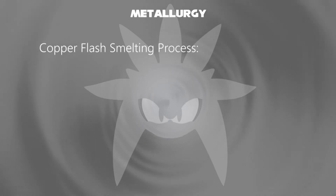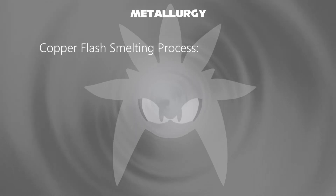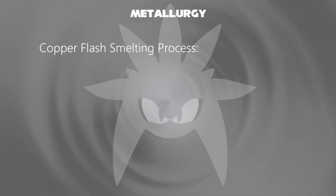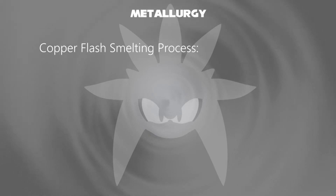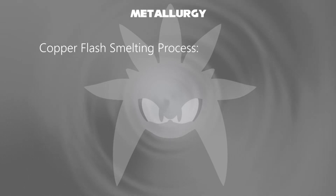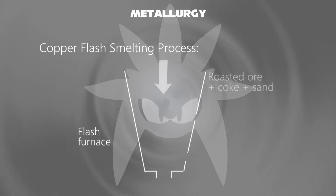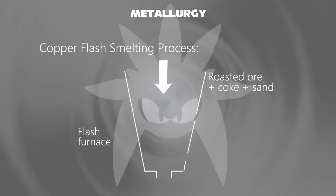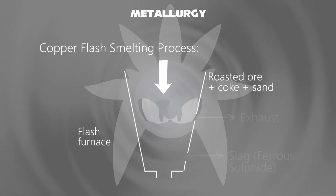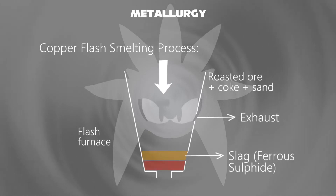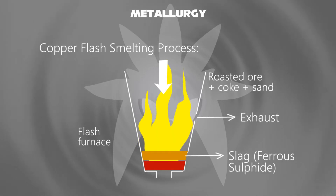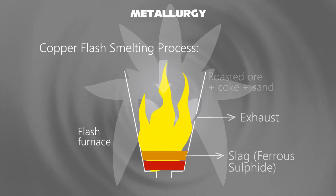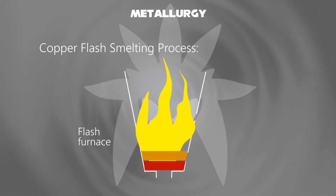For example, let's consider the copper flash smelting process, with some of the raw materials used. First, in this furnace, a mixture of roasted ore, coke, and sand is poured into it, and heat is simultaneously started for a couple of days.